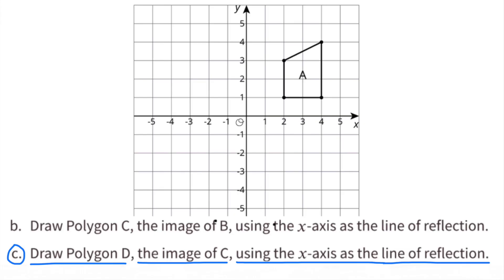C. Draw polygon D, the image of C, using the x-axis as the line of reflection.